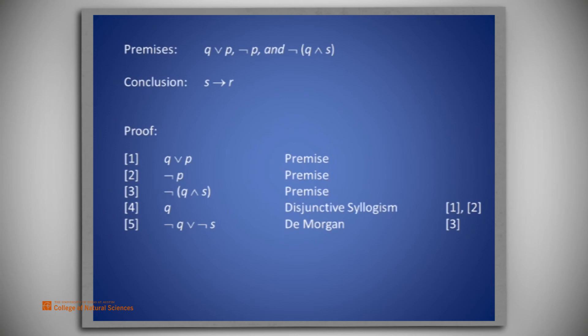Since Q is true from line 4, and we know that at least one of Q or S must be false, then that says that were we to apply disjunctive syllogism again, we would have S must be false from line 5. We apply disjunctive syllogism one more time to lines 4 and 5 to get line 6 that S is false.